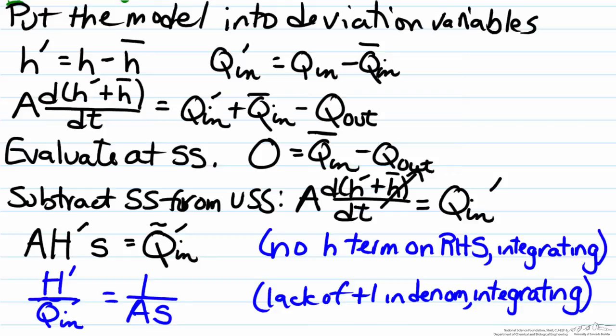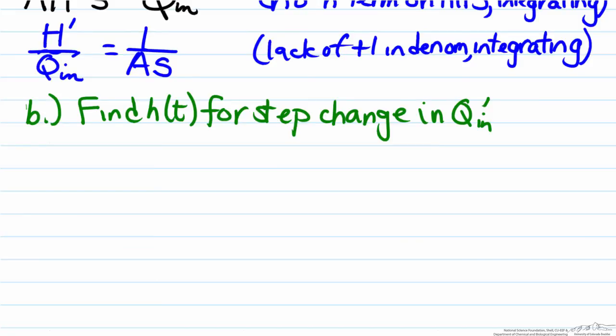Now that we have found the transfer function we can answer part b which asks us to take a look at what the effect would be of a step change of magnitude M in the inlet flow rate. And since we have a transfer function in the Laplace domain we need to evaluate the step change in the Laplace domain.